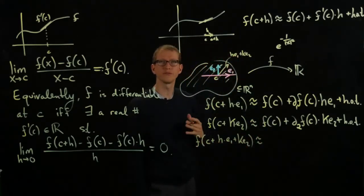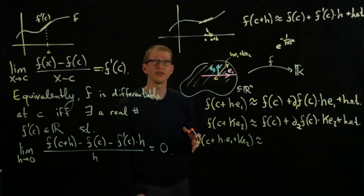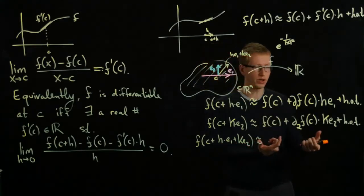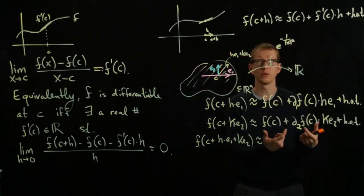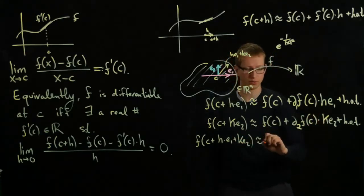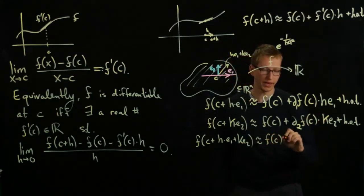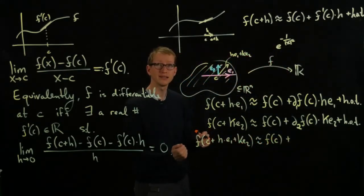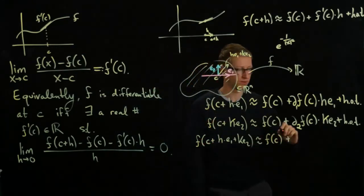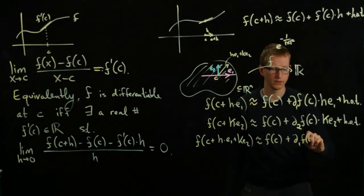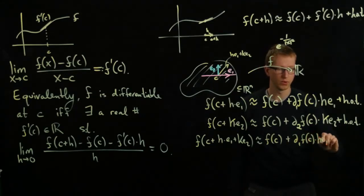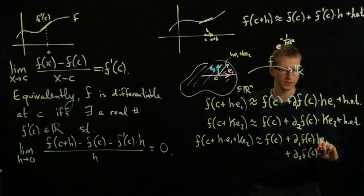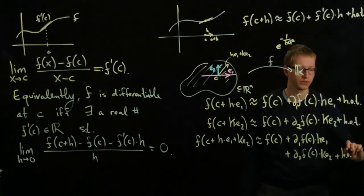F of C plus H E1 plus K E2. And when we're doing a first-order approximation of a function, we're looking at the linear term. And because we're looking at the linear term, we know that when we combine these two effects, they'll be combined in a linear fashion. And as a result, we expect that this expression can be approximated by the value of the function at C plus the linear effects from each of the directions. So this will look like D1F(C) times H E1 plus D2F at C times K E2 plus these higher-order terms which we're neglecting.